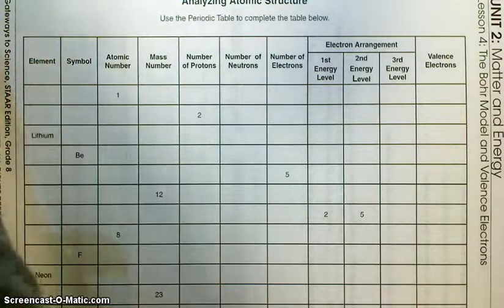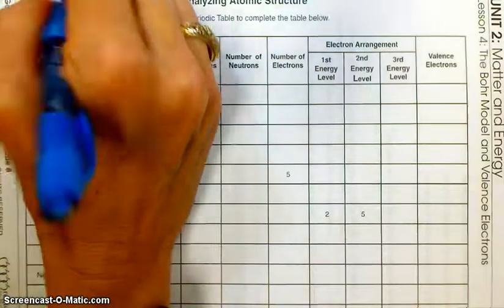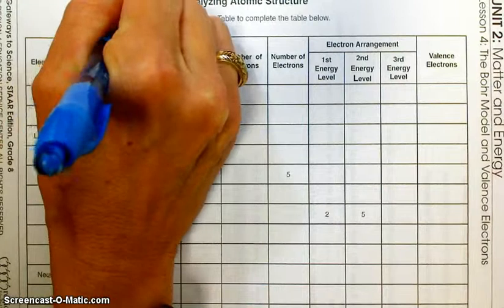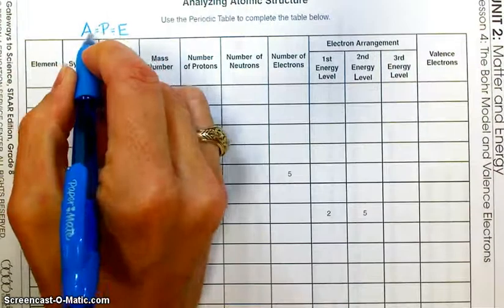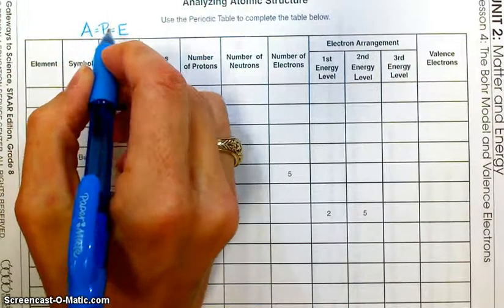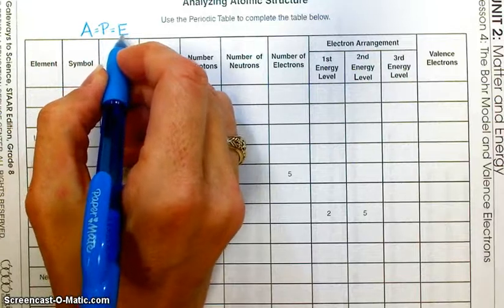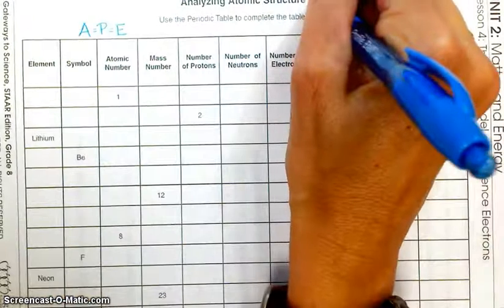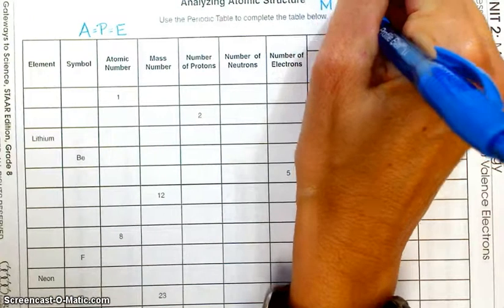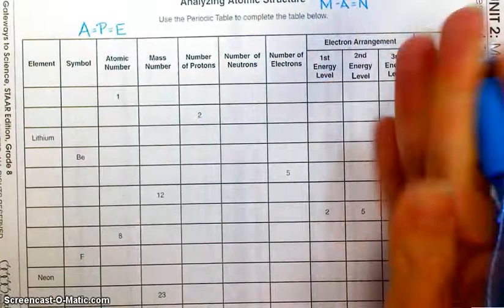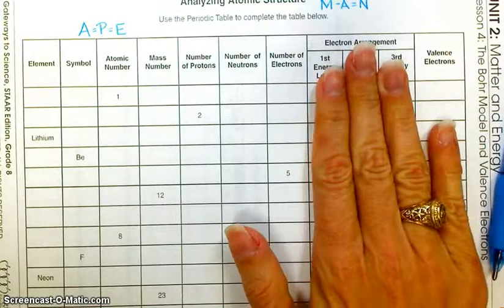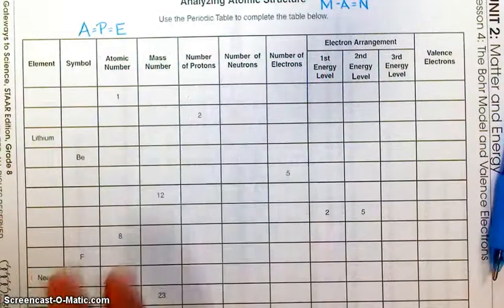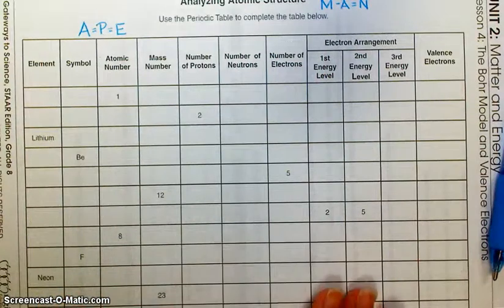Today we're going to expand on that. We already know from our keeper sheets that atomic number is the same as the number of protons, and also — for right now until I tell you differently — it's equal to the number of electrons. Mass number minus atomic number equals number of neutrons. Basically all of this part of the sheet we already know how to do.